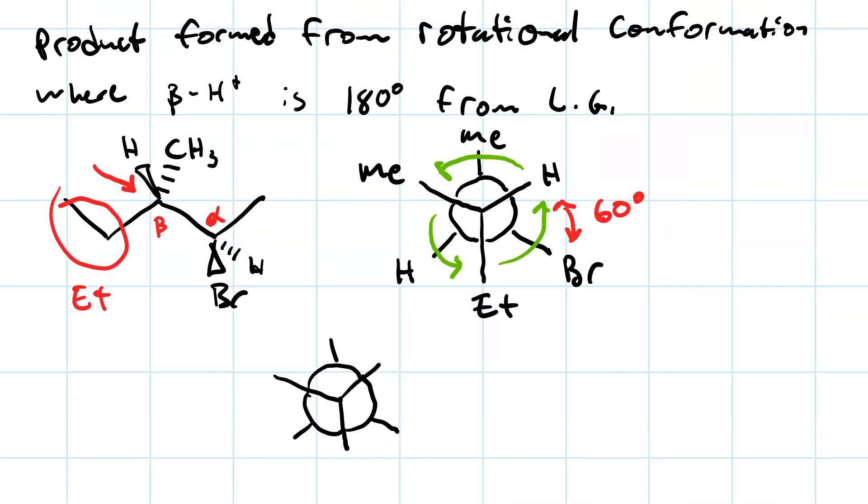So we're doing this rotation. We're going to leave the back carbon the same, so the bromine is still down and to the right, the methyl is still straight up, and the hydrogen is down and to the left. Our hydrogen started out on the front carbon, up and to the right, and now it's moved over to be where the methyl group was, up and to the left. Our methyl group moves down to the bottom where the ethyl group was, and the ethyl group goes where the hydrogen was.